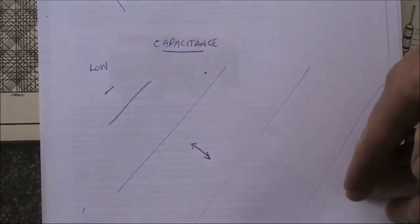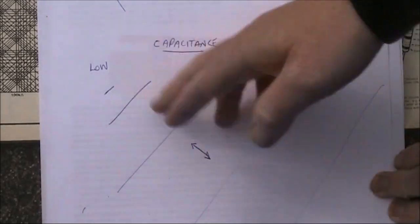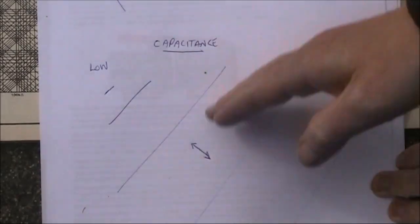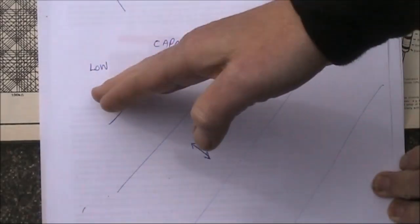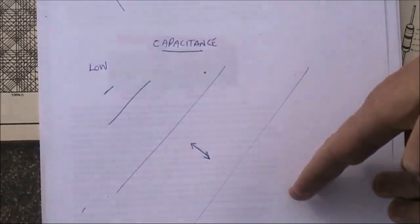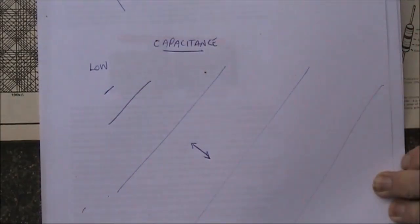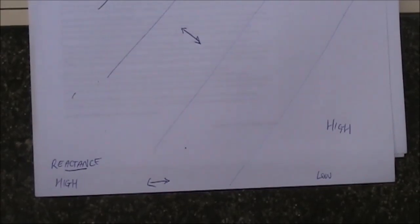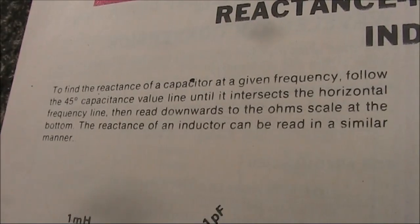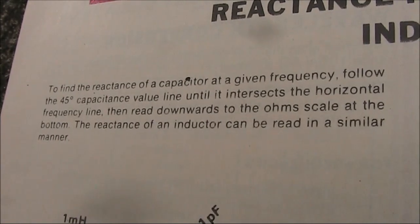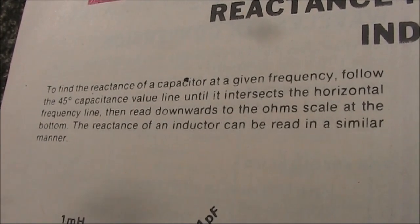If you have a look at capacitance, you've got the lines that are 90 degrees different, but still sloping. Low capacitance up here, top left, high capacitance down here, bottom right. And you've got the reactance down the bottom. You can use this to tell you the reactance of a capacitor or inductor at a given frequency. And it tells you how to do that here.